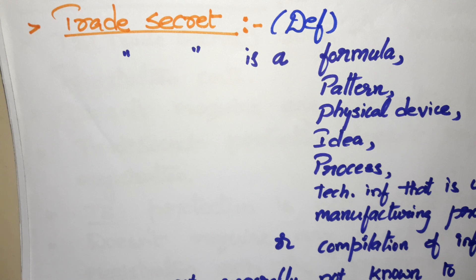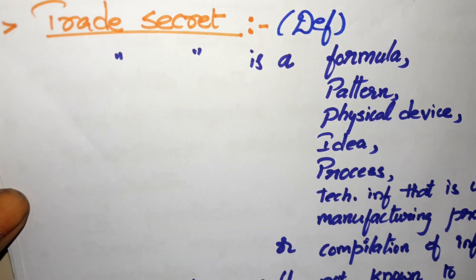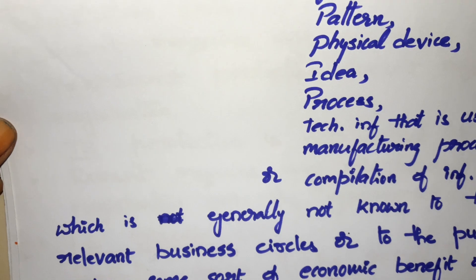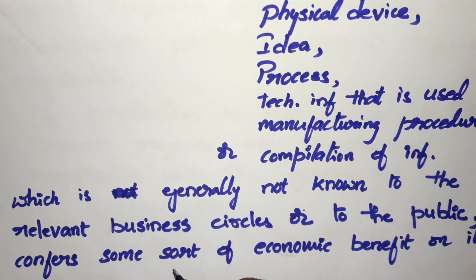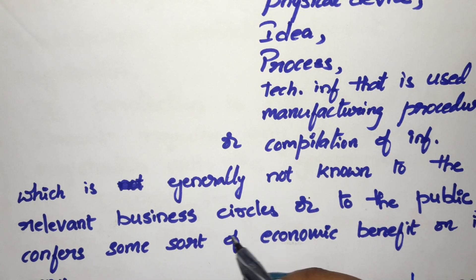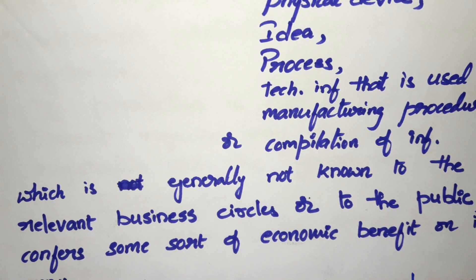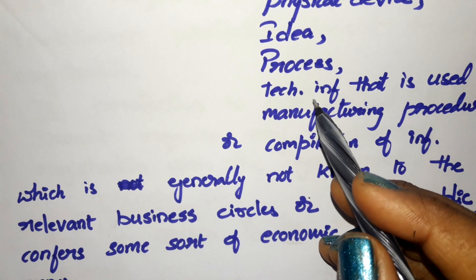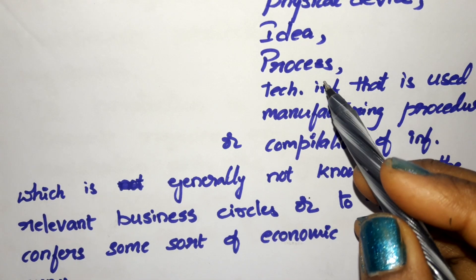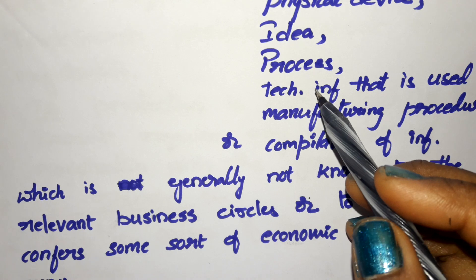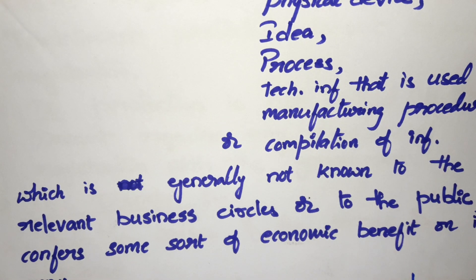A trade secret is some idea, process, formula, pattern, or any information that should be maintained as a secret — that should not be exposed to the public. Whatever the business formulas, ideas, or processes a company is using, that is a trade secret, which is generally not known to the relevant business circles or to the public.